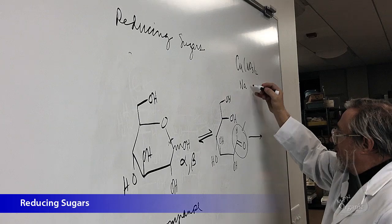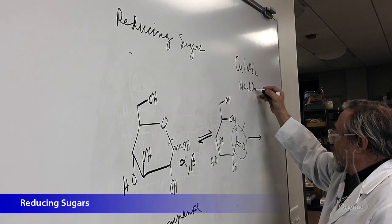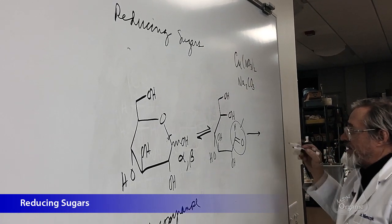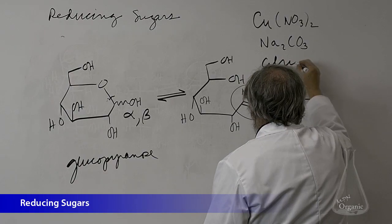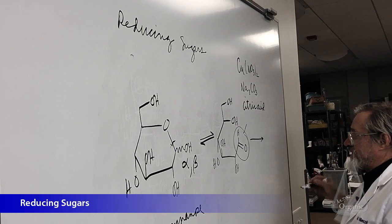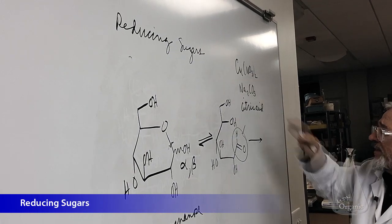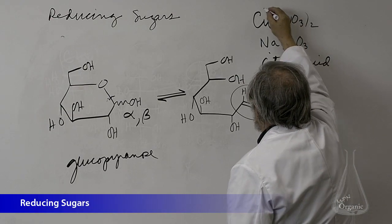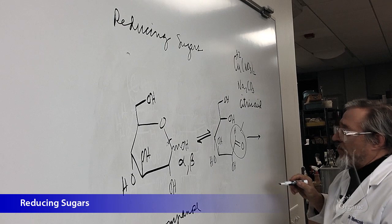And there's a lot of sodium carbonate in there to make it very basic, and there's also citric acid, a lot of citric acid. And this coordinates the copper plus 2. This is in a plus 2 oxidation state, and that's the important thing.